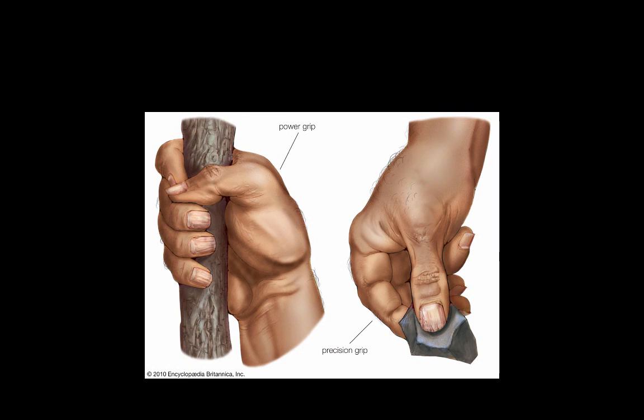An example of a positive mutation would be the opposable thumb of humans, which allows for strength as well as precision grips of instruments. This has permitted humans to become more competitive.